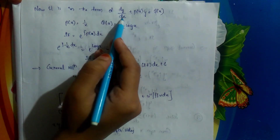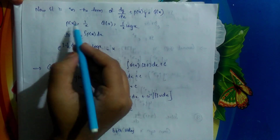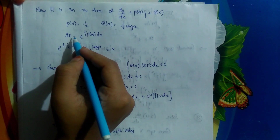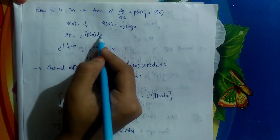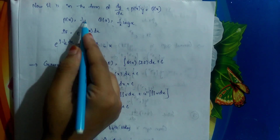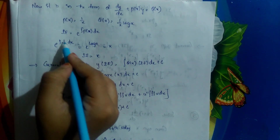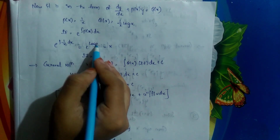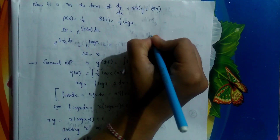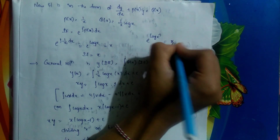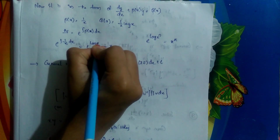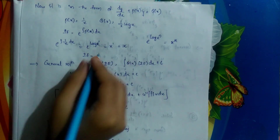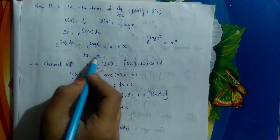Now the integrating factor is e to the power of ∫P(x) dx. Since P(x) is 1/x, the integral of 1/x with respect to x is log x. So the integrating factor is e to the power of log x. We know e^(log x^n) equals x^n, and here the power is 1, so e^(log x) equals x. The integrating factor is x.